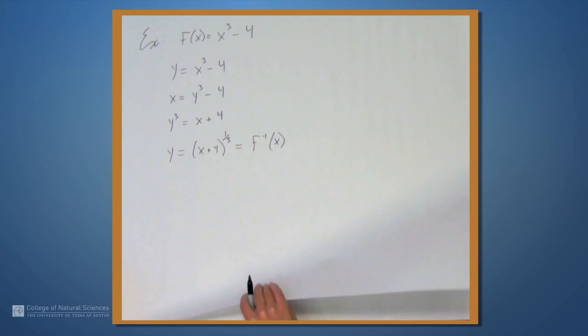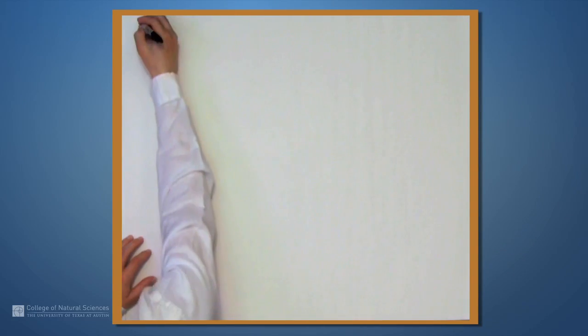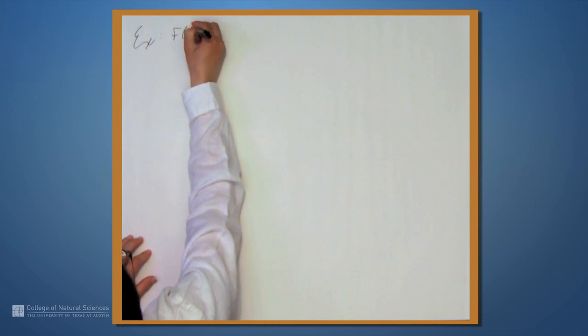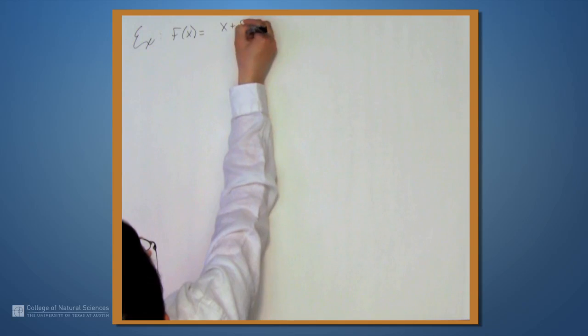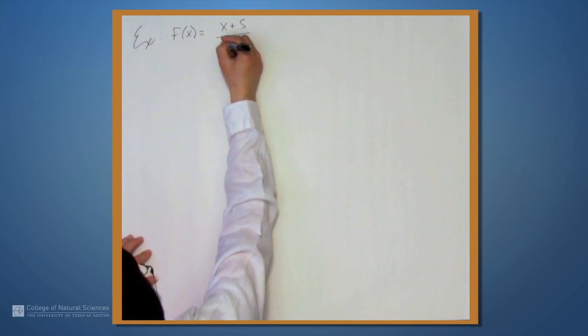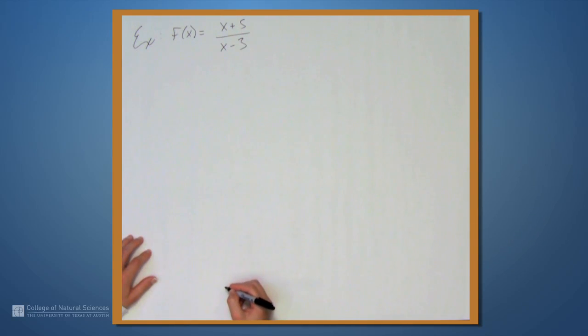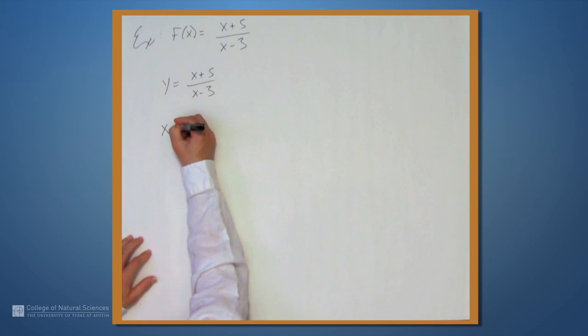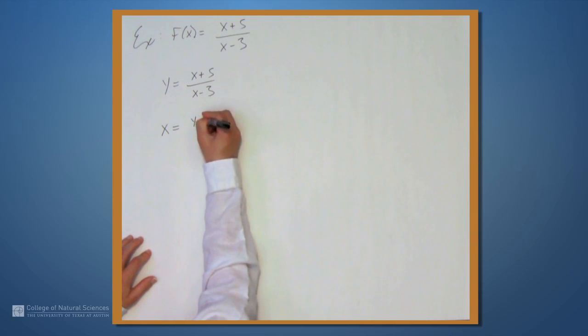Now, let's do an example with a rational function. Let's let f(x) be (x plus 5) over (x minus 3). We start with y equals (x plus 5) over (x minus 3). Switch the places of x and y. We get x equals (y plus 5) over (y minus 3).